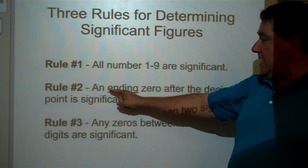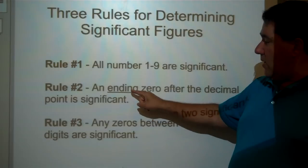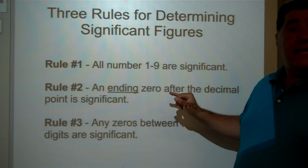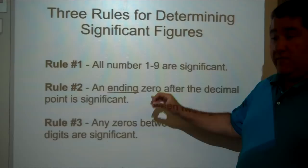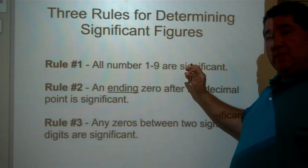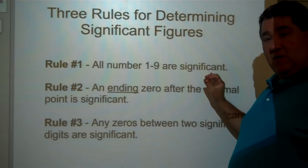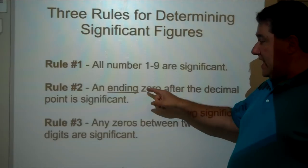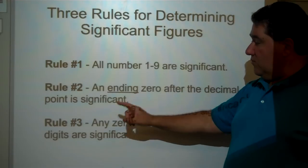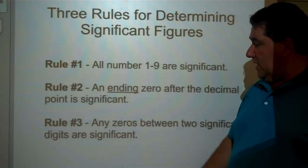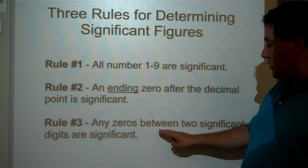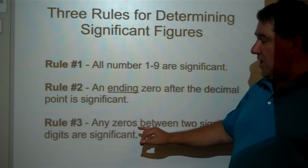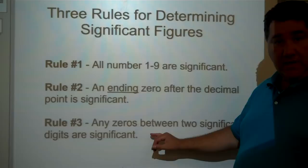Rule two: any zero ending after a decimal point is significant. If you have a decimal point and somewhere at the end of that series of numbers is an ending zero, that is a significant figure. And rule number three: any zeros between two other significant digits are also significant.